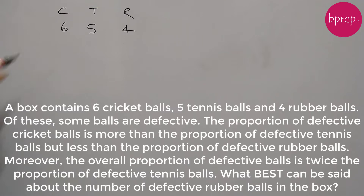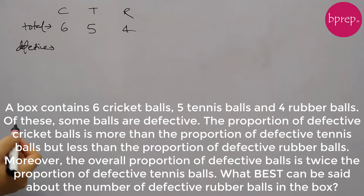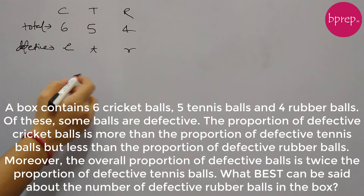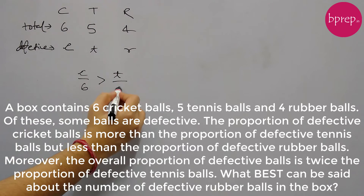Let's say out of these total balls, the count of defective balls are small c, small t and small r. It is given that the proportion of defective cricket balls — which is c by 6 — is more than the proportion of defective tennis balls, which is t by 5. But this quantity is less than the proportion of defective rubber balls, which is r by 4.